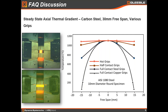There are trade-offs when talking about thermal gradient. The full contact copper grips have very good electrical conductivity, so we can heat very fast with those grips. The partial contact stainless steel grips don't have as much connectivity to the sample, so we are a little more limited in the heating rate. As with everything in life, there are trade-offs that you have to think about.